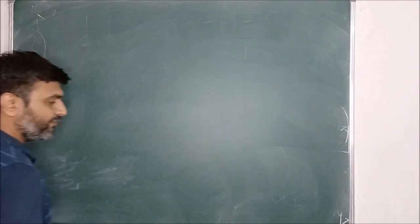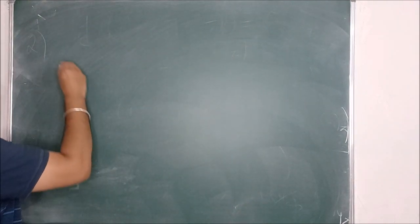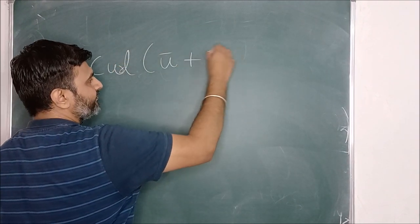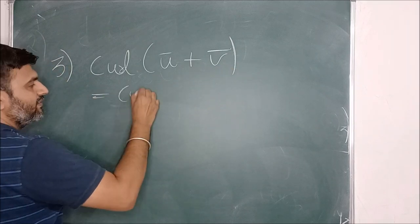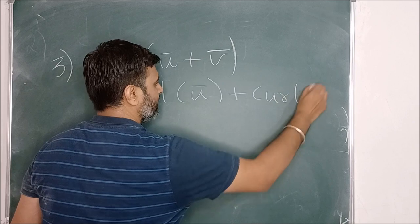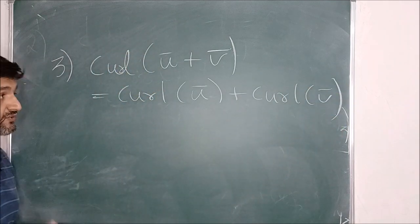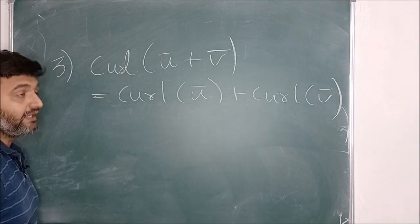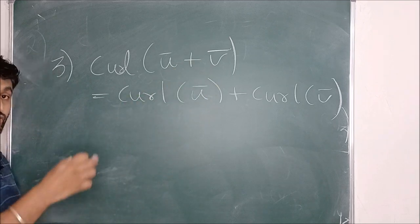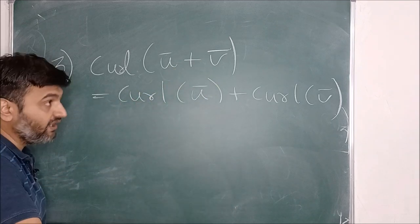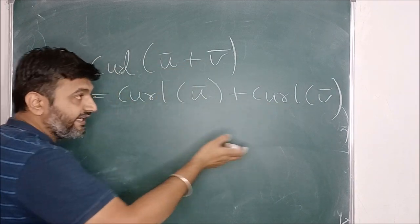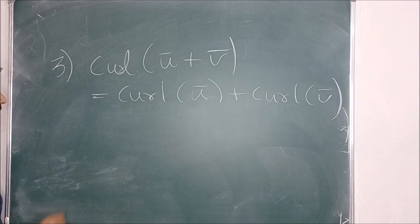The third property is quite simple. Curl of the sum of two vectors U bar and V bar equals curl of U plus curl of V. If U bar is (u1, u2, u3) and V bar is (v1, v2, v3), then U + V is (u1+v1, u2+v2, u3+v3). Finding the curl of this sum gives the same result as finding the curl of V then adding — you get the same answer.